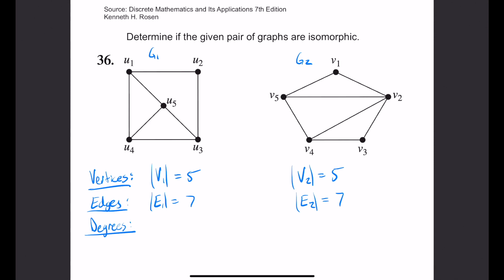A degree of a vertex is the number of edges connected to it. So for vertex u1, it's 1, 2, 3. The degree of u1 is 3. The degree of u2 is 2. The degree of u3 is 3. The degree of u4 is 3. The degree of u5 is also 3.